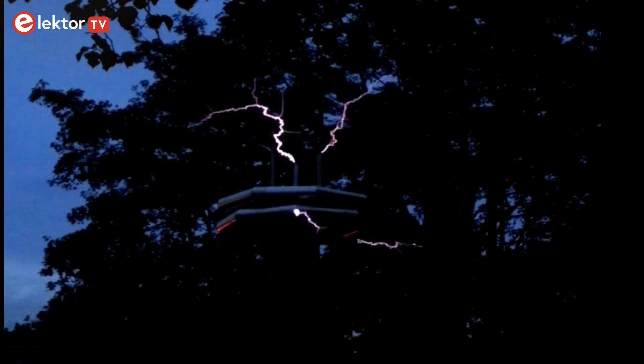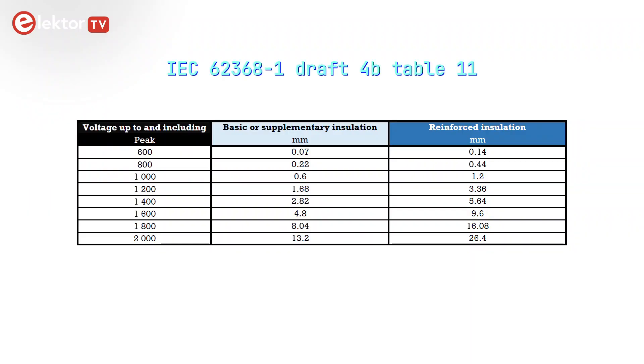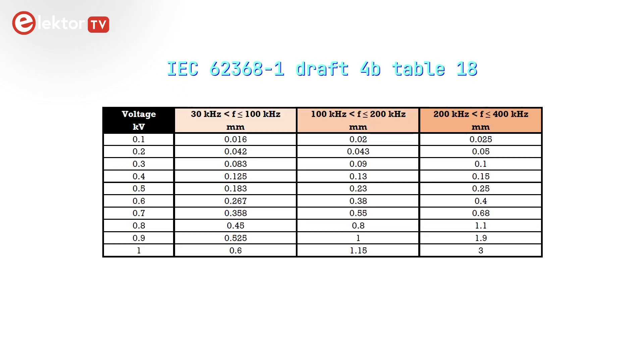Unfortunately this is not the complete story, as there is also a frequency component to be considered. Up to frequencies of 30 kHz the values I mentioned are probably okay. I haven't really figured out the frequency part, but my interpretation is that this is only an issue when the high-frequency working voltage has values of 1 kV or more. Table 11 in my draft document starts at 600 volts with a clearance of 0.14 mm. This value is much lower than the 1.5 mm clearance obtained from the up to 30 kHz table, and you must use the highest value. The same situation applies for creepage distance, suggesting that in my scenario I can ignore the frequency part.